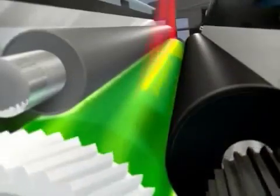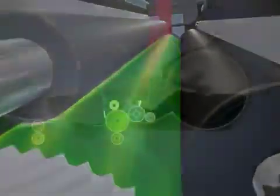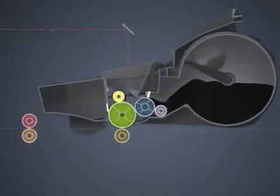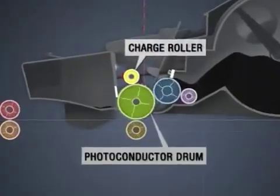Lexmark Laser Technology uses an electrophotographic process to transfer digital data to paper. The process begins with the charge roller, which applies a uniform charge to the surface of the photoconductor drum.